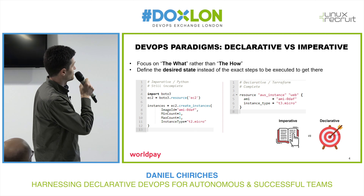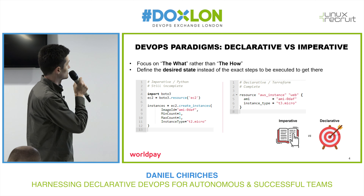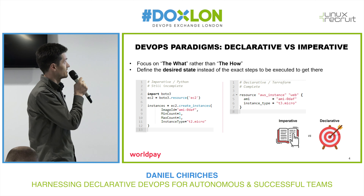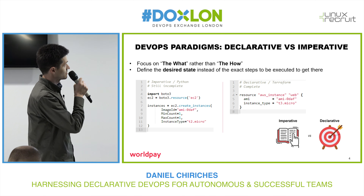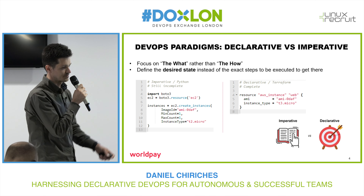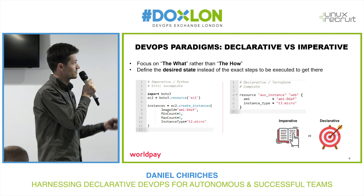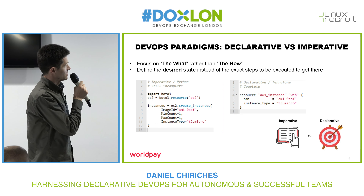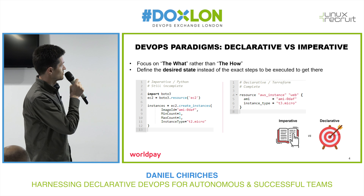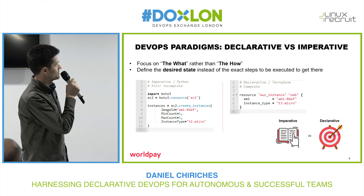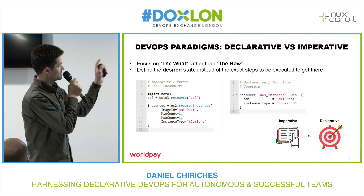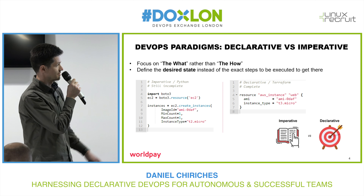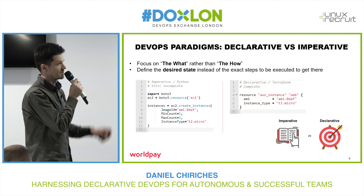Declarative versus imperative — what does that mean? Declarative means to focus on the target rather than how you are getting there. You are defining the desired state of your infrastructure component instead of thinking about the steps on how to get there. I gave a quick example related to creating an EC2 instance in AWS with the two different paradigms. On the left, it's the imperative approach using a Python script.